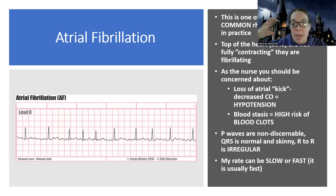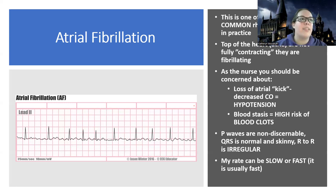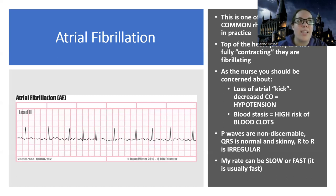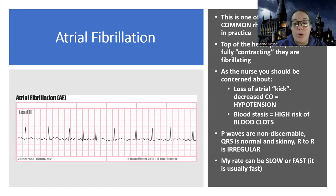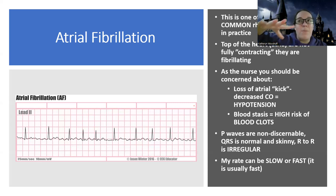If the top of my heart is not squeezing and is just kind of twitching, it's not going to do its same job. If I'm not getting a good squeeze or spit-out because I'm not fully contracting, I'm spitting less blood forward. Therefore, I'm going to have lower cardiac output and can have hypotension. But the other problem is — if the blood isn't moving forward, where is it staying? It's staying in that atria, so we can have pooling of blood.